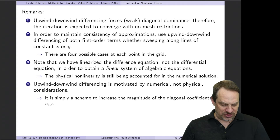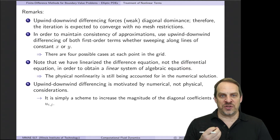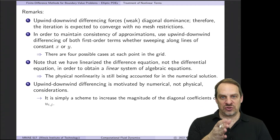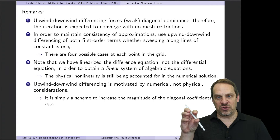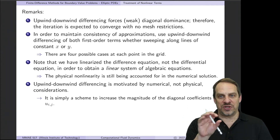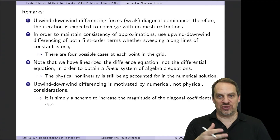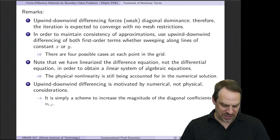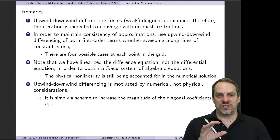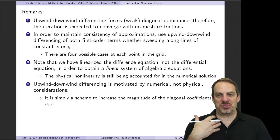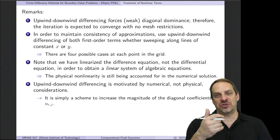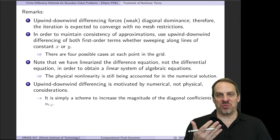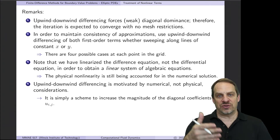An important point: we have linearized the difference equation using Picard linearization, not the differential equation itself. We are still solving the nonlinear PDE — the U ∂U/∂X terms still exist. Once it converges, the U out front and the U in the first derivative will be the same, so the nonlinearity is preserved in the converged solution. Also, the motivation for upwind-downwind differencing is purely numerical — to enhance diagonal dominance. Though it's sometimes presented as physically motivated by fluid direction, the fundamental reason is numerical stability.